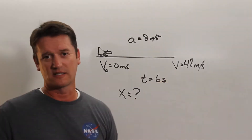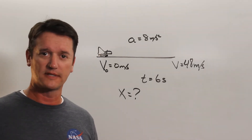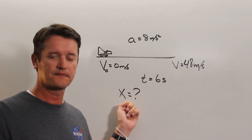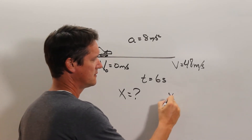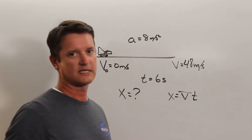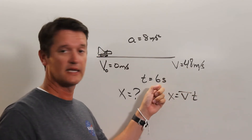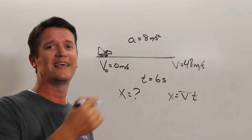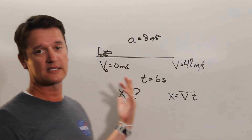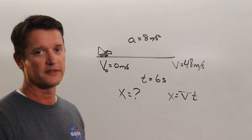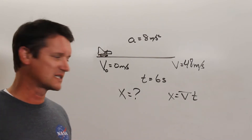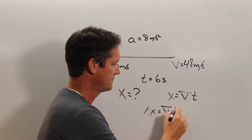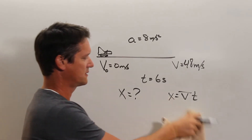Now that we know that the ending velocity is 48, there are a lot of different ways to solve for the displacement. The first thing we need to think about is what variable we're solving for. In this case it's x. We have an equation for x — we know that x is equal to the average velocity times time. If you took 48 meters per second times 6, you'd be wrong, because it wasn't going 48 meters per second the whole time. It was only going 48 meters per second at the very end. Our equation for displacement is the change in x equals the average velocity times time — not the ending velocity.